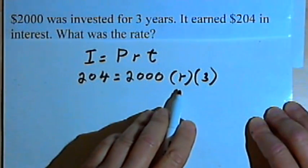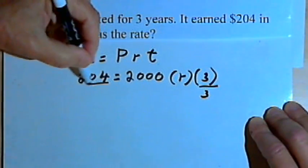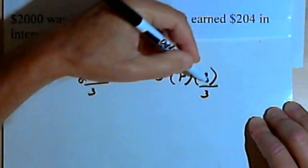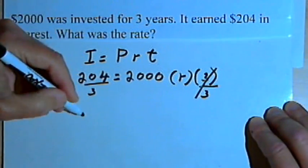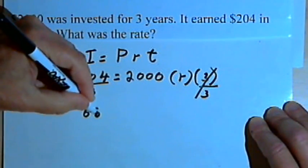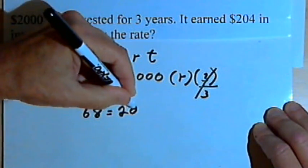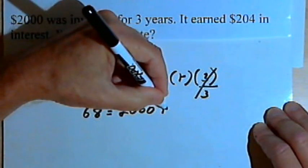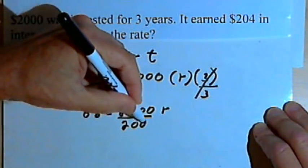So we want to find out what the R is. I'm going to start out by dividing both sides of the equation by three. 204 divided by three is 68. So I've got 68 equals 2,000 times R. And then I just divide both sides of the equation by 2,000.